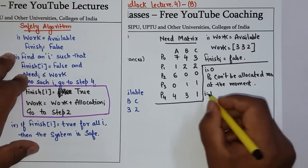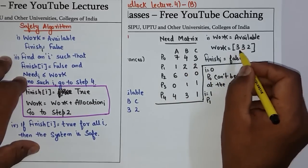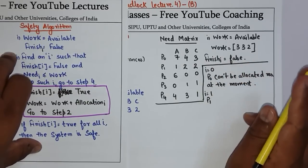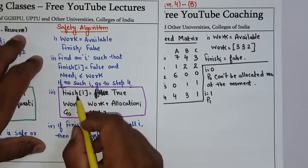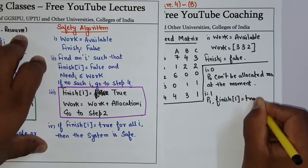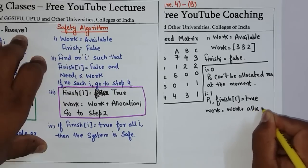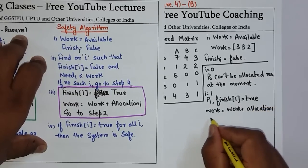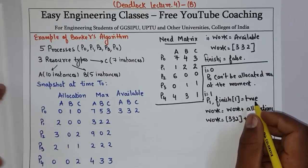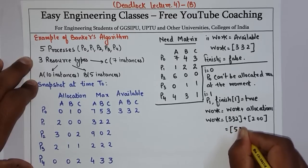Then check for P1: P1 needs 1, 2, and 2, and Work is 3, 3, 2. We can allocate resources to P1. So we set Finish[1] = true. The new Work will be Work plus Allocation of P1. Current Work is 3, 3, 2 and P1's allocation is 2, 0, 0. So new Work = 3+2, 3+0, 2+0 = 5, 3, 2.